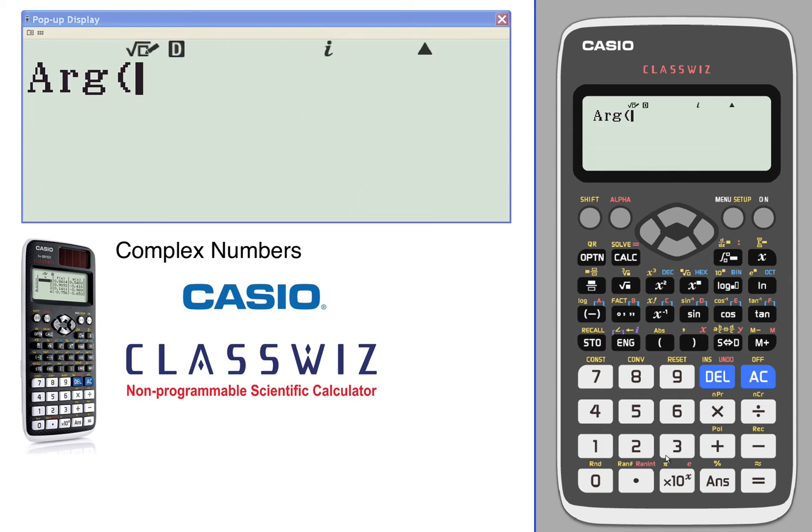We'll calculate the argument of 3 + 4i, which will give us the angle on the complex plane: 53 degrees. We're currently in degree mode, so that's where you see the little 'd'. The 'i' tells you you're in imaginary mode.